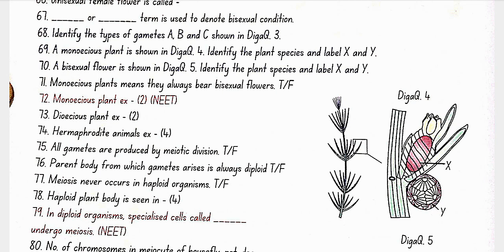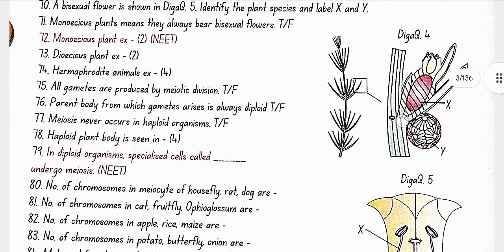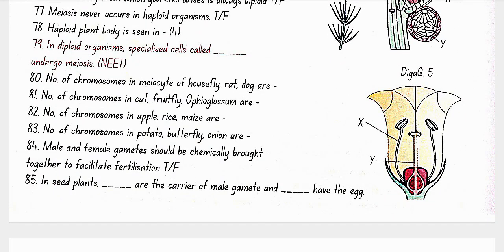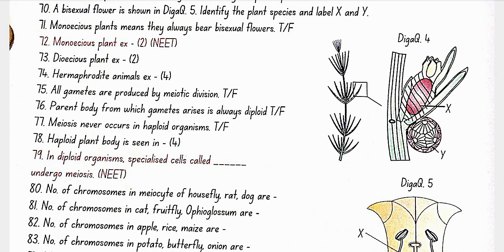In diagram 5, the bisexual flower is sweet potato where X is stamen and Y is carpel. Monoecious plants can also bear unisexual flowers; both sexes of flowers are present on a single plant. Examples: cucurbits and coconuts are monoecious; papaya and date palm are dioecious. Hermaphrodite animal examples are earthworm, sponge, tapeworm and leech.